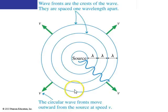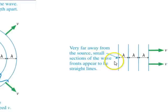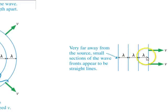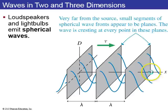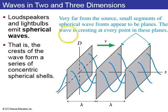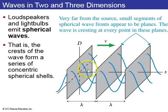Here we have circular wave fronts moving outward from the source at some speed v. As they get further from the source, they get less and less curvy. If you go very far away to the right, these wave fronts start to look like lines — this is when you get to plane waves, spaced one wavelength apart, traveling to the right at speed v. In three dimensions, these circles are actually spherical wave fronts, and as you get very far from a spherical wave front, it starts to look like a plane wave. Every plane defines all positions where the waves are crests, and halfway between these planes, all the waves are troughs.